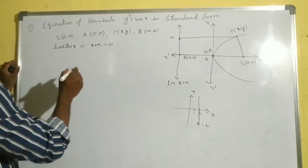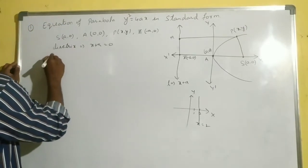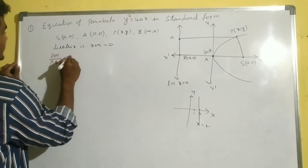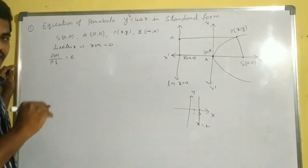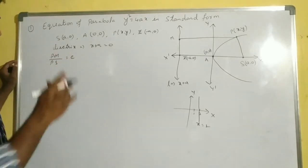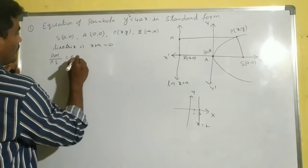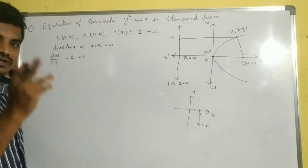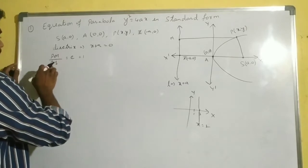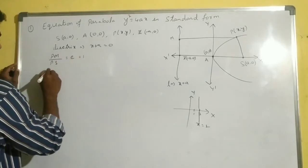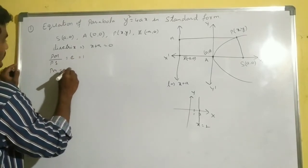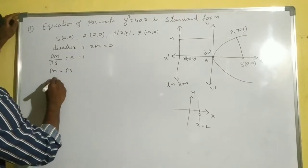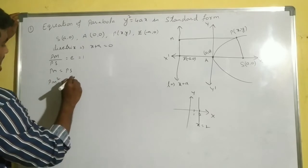The ratio PM by PS equals some constant e. This e value equals 1 for the parabola, and e equals 0 for the circle. So PM by PS = 1, therefore PM = PS. When I take squaring on both sides, PM² = PS².